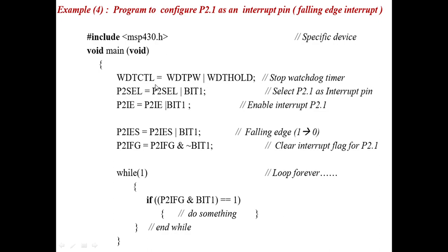Next, we need to select port 2 pin 1 as the special function — that is, the interrupt function. For that, we use the instruction P2SEL, which indicates port select, equal to P2SEL | BIT1. This gives a value of 1 to pin 1, which indicates special function, i.e., interrupt pin. If you give 0, that is a GPIO pin; since we need it as an interrupt pin, we give 1.